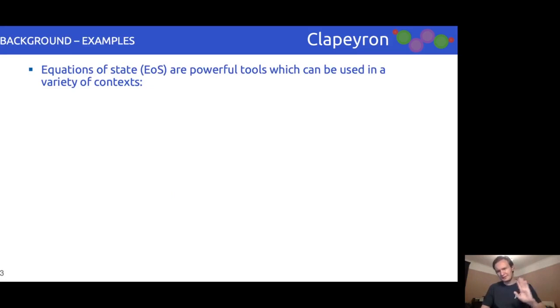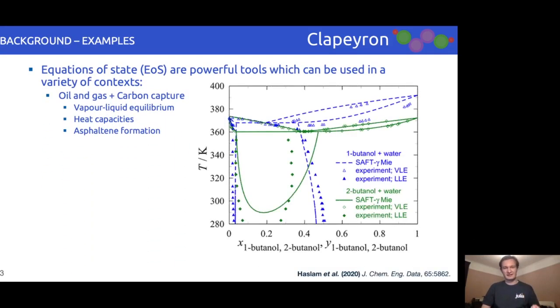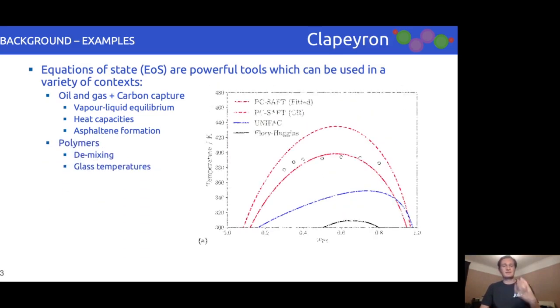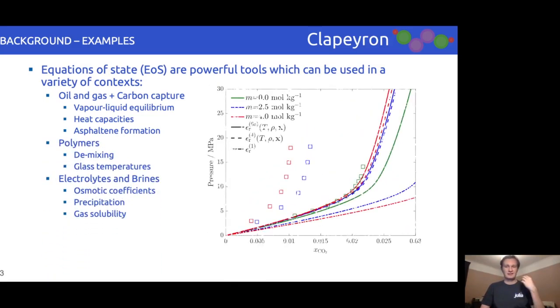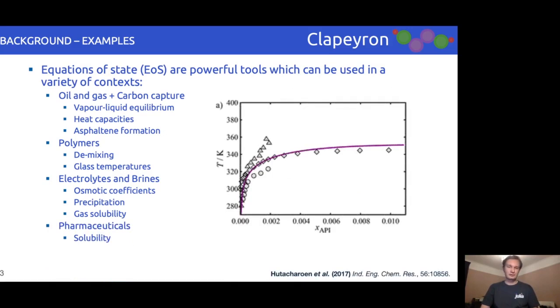Equations of state have been used well beyond predicting the properties of a glass of water and oil. Some examples include, naturally, oil and gas, and more recently carbon capture, particularly vapor-liquid equilibrium properties. Other more advanced examples include polymers, electrolytes, and pharmaceuticals. Thus, as you can see, these equations can be of use to multiple disciplines.